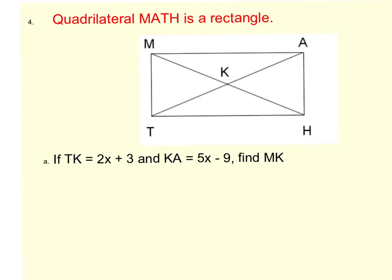In this video, we're going to do a couple of example problems using rectangles. We are given here that quadrilateral MATH is a rectangle, and they tell us that TK is 2x plus 3 and KA is 5x minus 9.